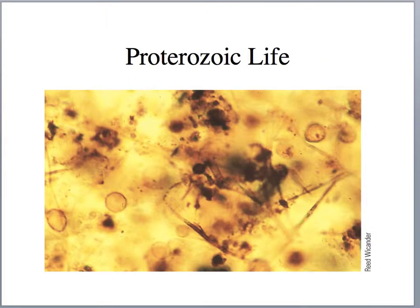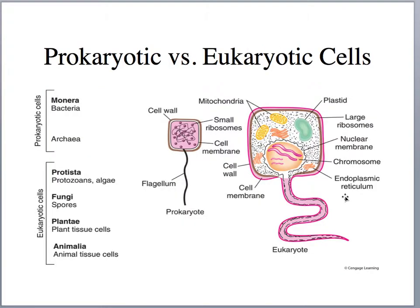Some of the earliest forms of life we find are single-celled prokaryotic cells. These are some single-celled microfossils from the Gunflint Chert in Ontario, Canada. When we look at these first fossil organisms, we find primarily prokaryotic cellular organisms. The word 'karyo' means cell, so 'pro' means what came before — these are single cells that lack a nucleus and have free-floating DNA.